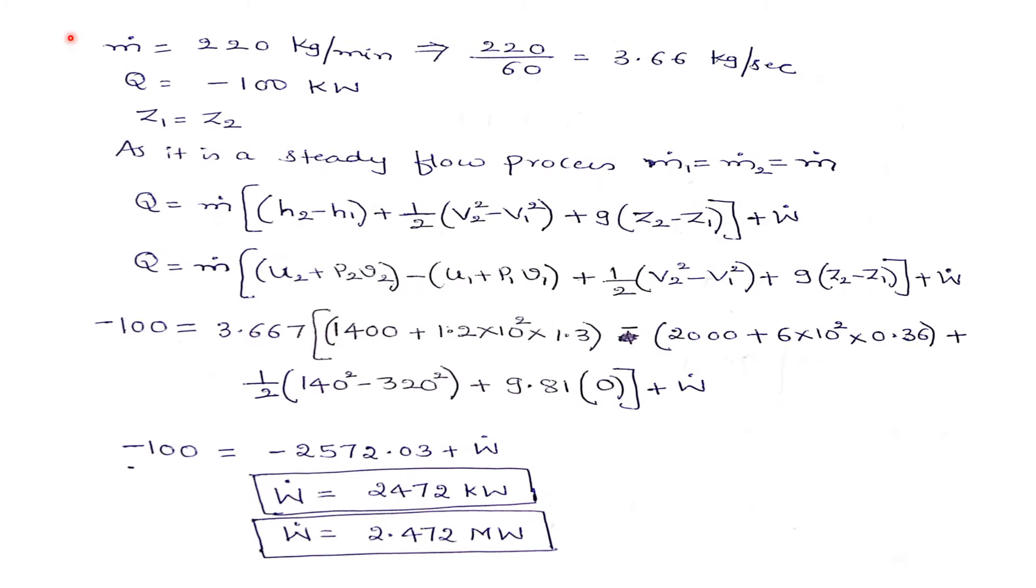The mass flow rate given is 220 kg per minute, which converts to 3.67 kg/s. Heat is rejected, so Q equals minus 100 kW. Potential energy is neglected, so Z1 equals Z2. As per the steady flow process, M1 dot equals M2 dot equals M.